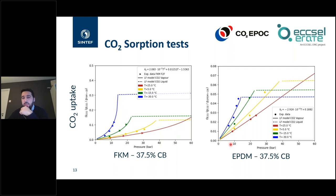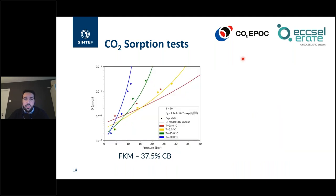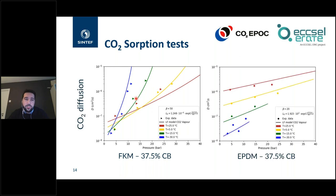EPDM with similar carbon black content shows a very different scenario: the increasing trend is simply linear with pressure, not exponential as in FKM. This leads to an opposite effect at the vapor-liquid equilibrium — lower CO2 uptake at lower temperature. This is an important finding: a polymer not used at all in oil and gas infrastructure becomes suddenly very interesting for CO2 transport because it has lower CO2 absorption.